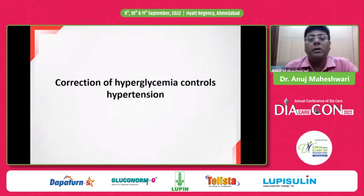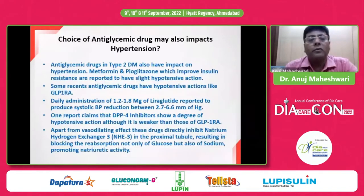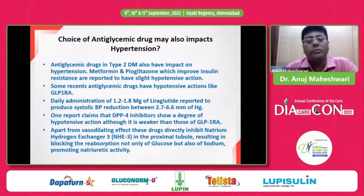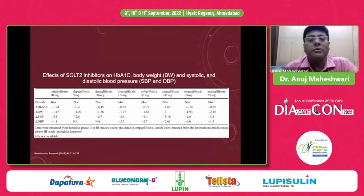Correction of hyperglycemia also makes a big difference in controlling hypertension. The choice of drug for glycemic control impacts hypertension management. Apart from vasodilating effects, certain drugs such as GLP-1 receptor agonists, pioglitazone, DPP-4 inhibitors, and finally SGLT2 inhibitors directly inhibit the sodium-hydrogen exchanger in the proximal tubule, blocking reabsorption of not only glucose but also sodium, promoting natriuretic activity. This reduces not only hyperglycemia but also blood pressure.